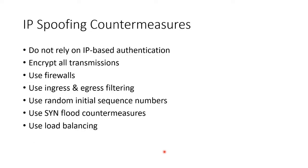How do we have countermeasures against spoofing? Don't rely upon IP-based authentication — don't accept packets just because they're in a list of trusted hosts. Make sure all of your transmissions are encrypted. Use firewalls and have filtering in and out. If possible, use random initial sequence numbers.